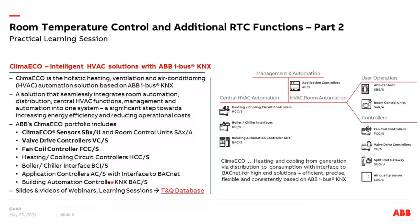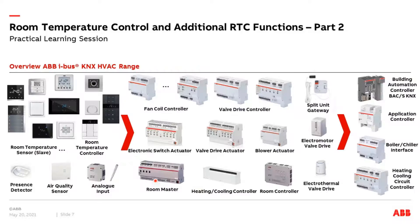You can find the slides and videos of these sessions in our training and qualification database. Here you can see an overview of the HVAC KNX range devices. On the left side we have the room operating elements — different designs with the temperature sensor inside or also with the controller built inside. In the middle we have the actuators or also controllers, like nine different types of fan coil controllers, the valve drive controllers, or special devices like for hotel applications, the room master or the room controller. On the right side we have the devices for distribution, management, or top-level functions.